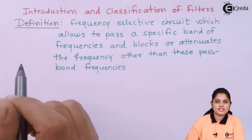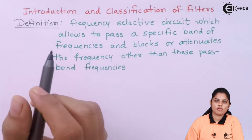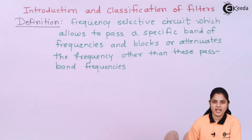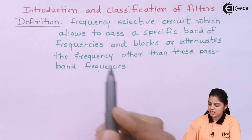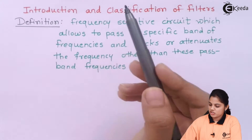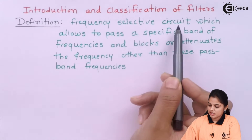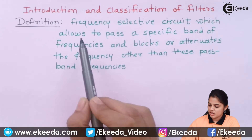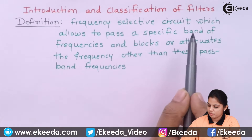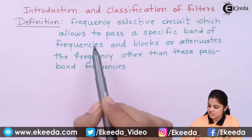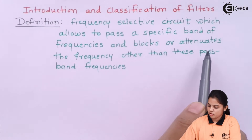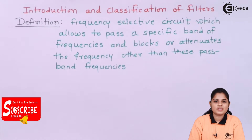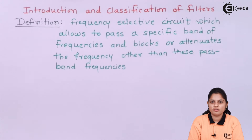So first let's see what is the definition of a filter. According to that we will decide what a filter is and what types of filters we have available to use. A filter is a frequency selective circuit which allows a specific band of frequencies to pass and blocks or attenuates frequencies other than these passband frequencies.